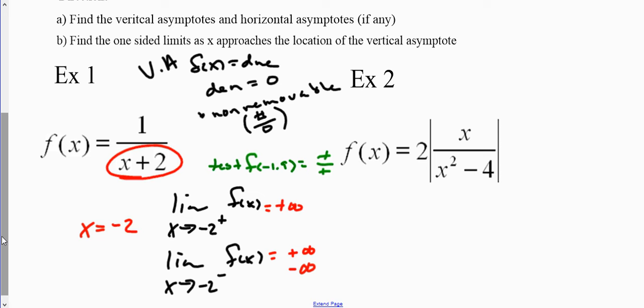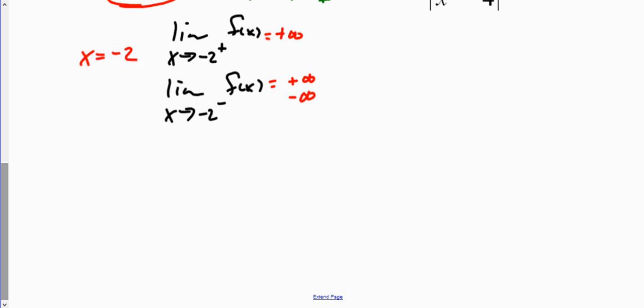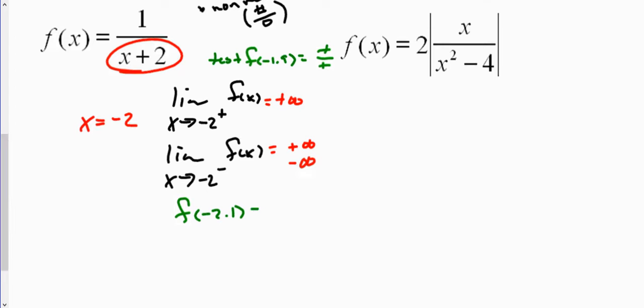On the other side, we take a test point to the left of negative two — so negative 2.1. Plugging that into the function, we have a positive on top but plugging in negative 2.1 gives us a negative in the denominator. So we have positive over negative, which makes it negative infinity. So approaching from the left side, we're approaching negative infinity.